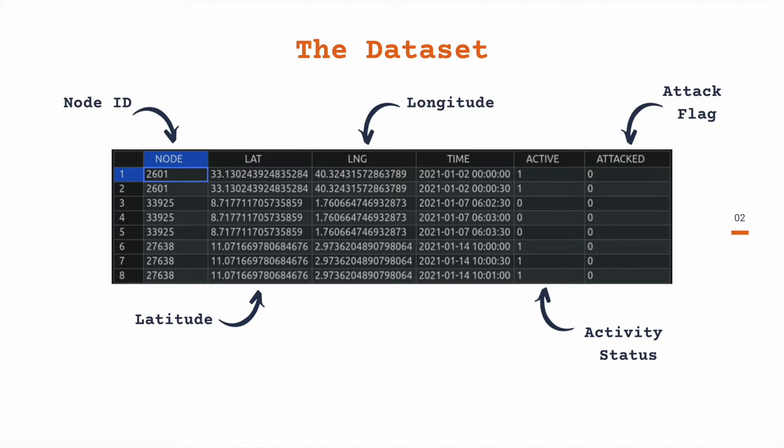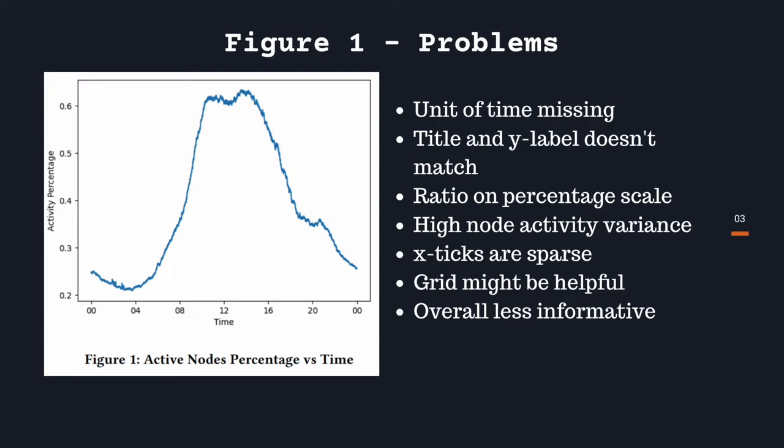Then followed by the activity and attack flag. The activity flag represents whether the node is active or not. The attack flag represents whether the node is an attacker or not. The attack flag is used to synthetically add attack data which is then used to build a simple neural network classifier to detect attacks.